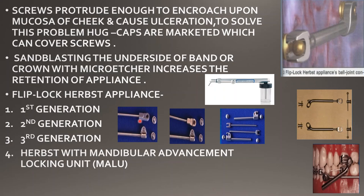In the first generation, the appliance is made of plastic, so when stresses are applied there are chances of breakage. To overcome that, the appliance in the second generation is made of metal — plastic was replaced with metal. The third generation is made with a horseshoe ball joint, which has proven to be more efficient than the previous generations in terms of both application and resistance to fracture.